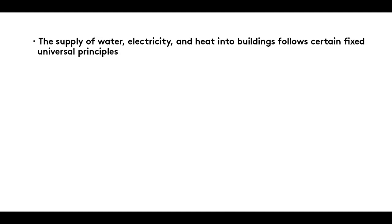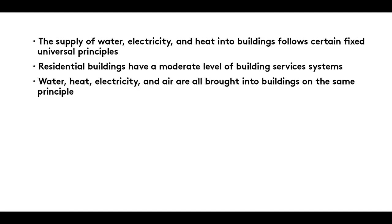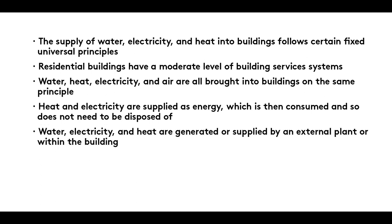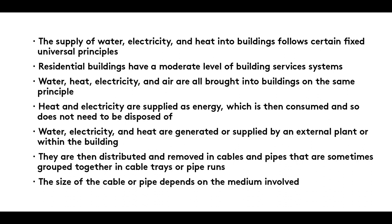Summary: The supply of water, electricity and heat into buildings follows certain fixed universal principles. Residential buildings have a moderate level of building services systems. Water, heat, electricity and air are all brought into buildings on the same principle. Heat and electricity are supplied as energy, which is then consumed and so does not need to be disposed of. Water, electricity and heat are generated or supplied by an external plant or within the building, then distributed and removed in cables and pipes that are sometimes grouped together in cable trays or pipe runs. The size of the cable or pipe depends on the medium involved. Our Building Services series continues with film number 5, in which we examine how building services are integrated into the architecture of a building.